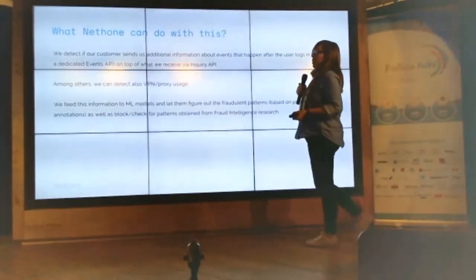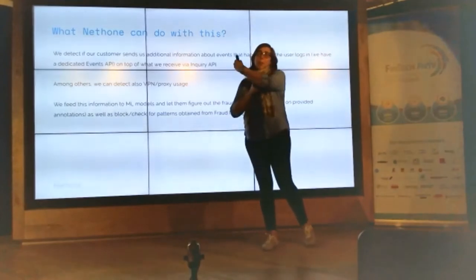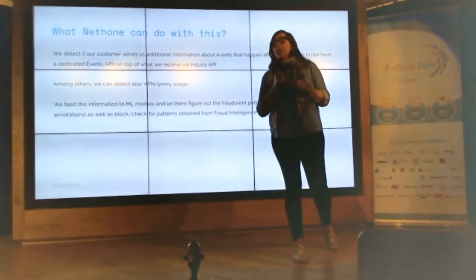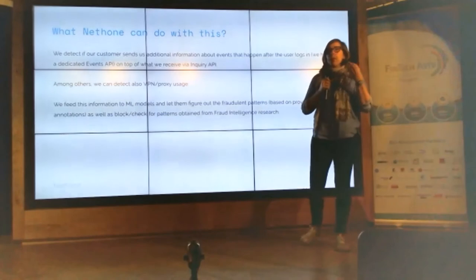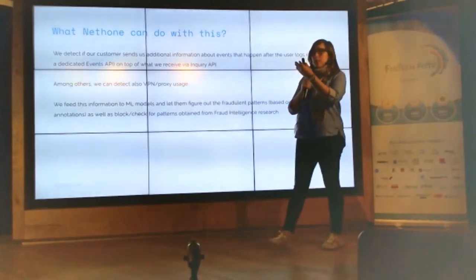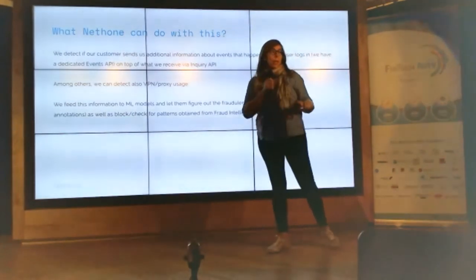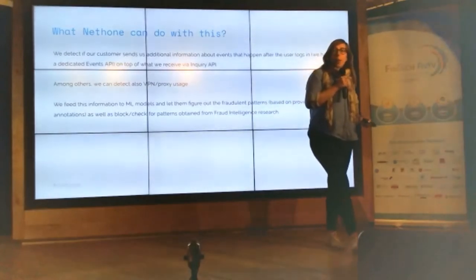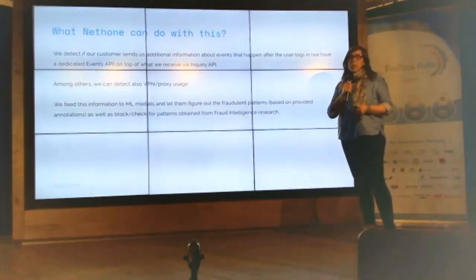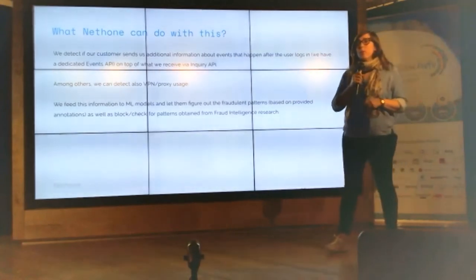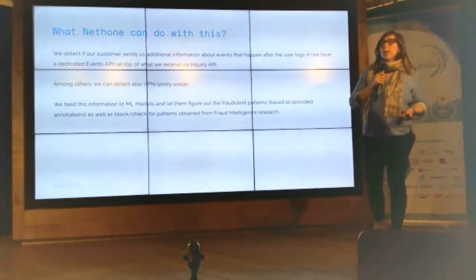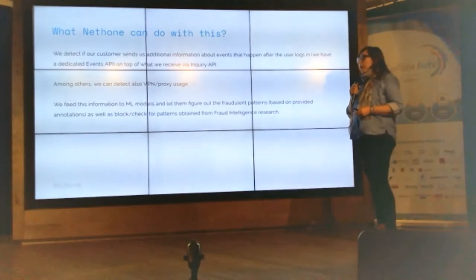What we do with that is our customers — the merchants, service providers, or banks — send us through API all events such as login, sign-up, and transaction. We take all this information along with the behaviors we find. We can detect VPNs and proxies so we know when something is fake. All the information we gather from the dark web, we put into our machine learning models, feed them with that, and then they know how to detect fraud. In real time, we can tell our customers if an action was done by a legitimate customer or a fraudulent one.